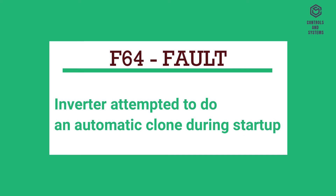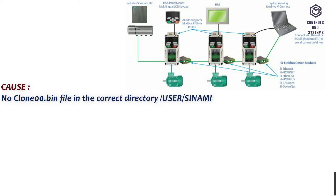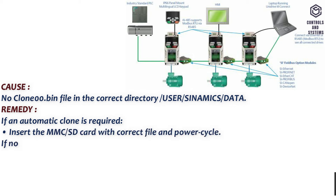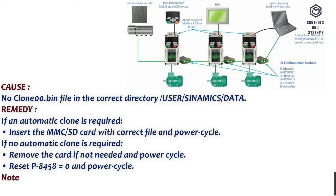F64 Fault: Inverter attempted to do an automatic clone during startup. Cause: No clone .bin file in the correct directory /user/sinamics/data. Remedy: If an automatic clone is required, insert the MMC/SD card with the correct file and power cycle. If no automatic clone is required, remove the card if not needed and power cycle. Reset P8458 equals 0 and power cycle. Note: Fault can only be cleared by a power cycle.